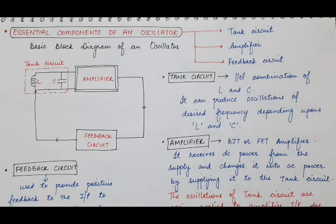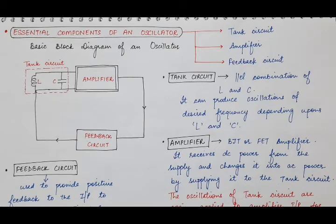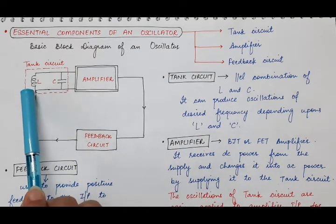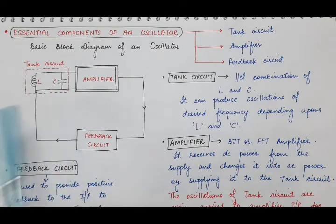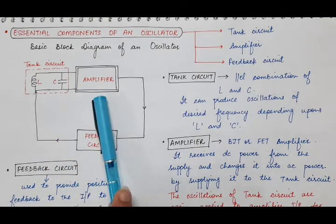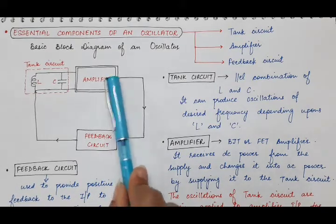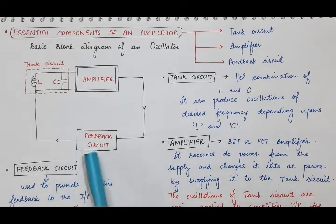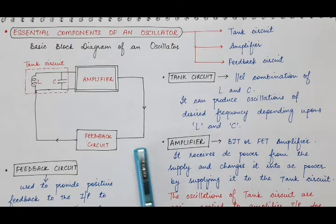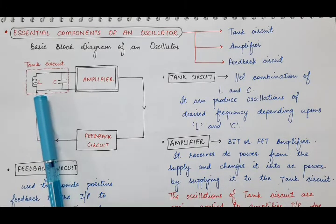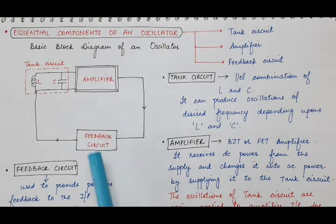Next, we will discuss what are the essential components of an oscillator. Here I have drawn the basic block diagram of an oscillator, which consists of the parallel combination of inductor and capacitor — collectively known as the tank circuit. This is one of the most important components of an oscillator, further connected to the amplifier, which is basically a BJT or FET transistor amplifier. The output of this amplifier is fed back to the tank circuit through the feedback circuit. So the oscillator contains three essential components: number one, the tank circuit; number two, the transistor amplifier; and number three, the feedback circuit.